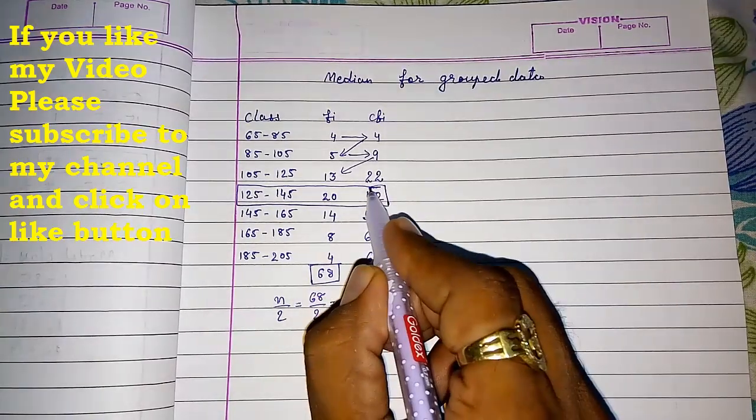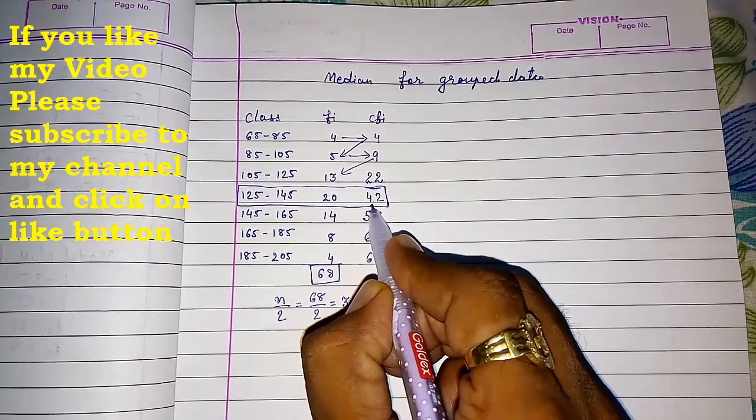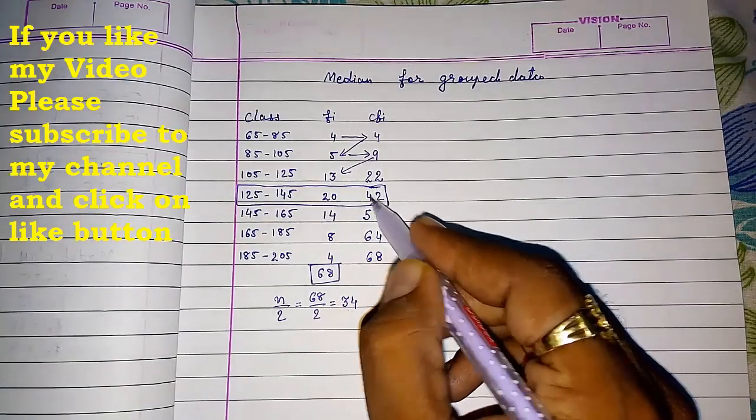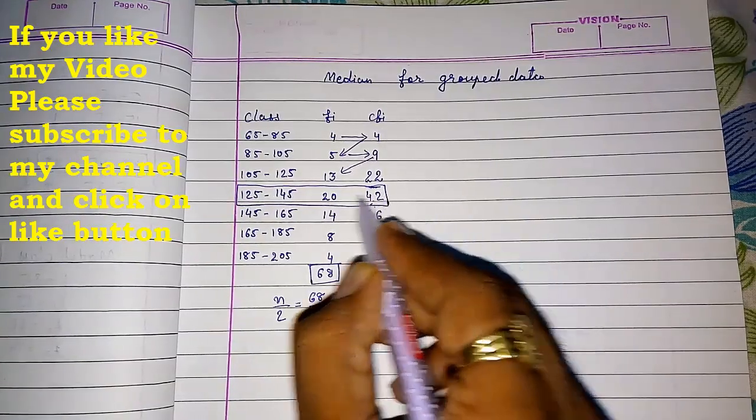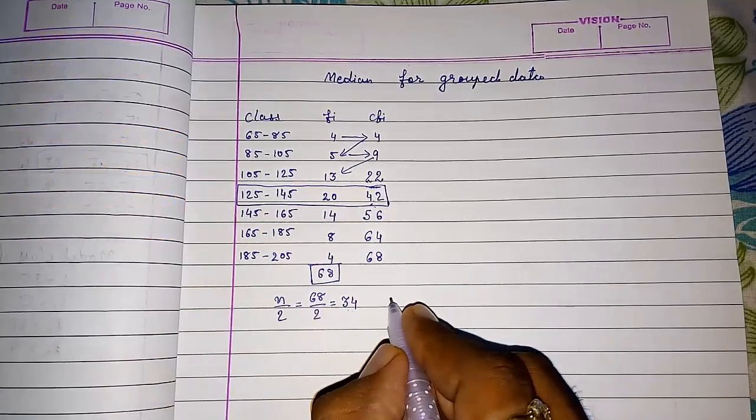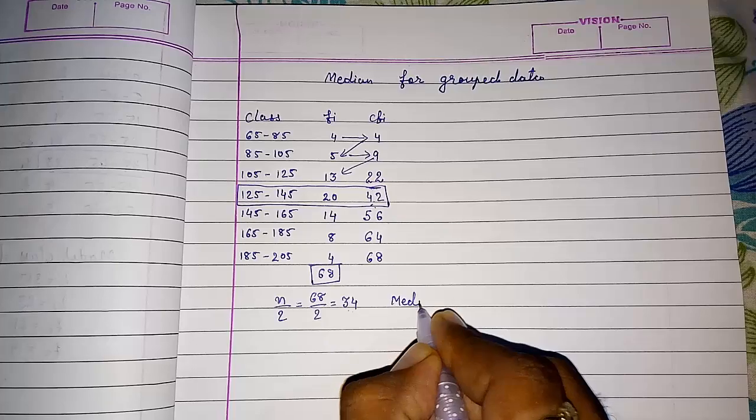34 is coming here, so we have to see the frequency greater than 34. 42 is greater than 34, so we have to see that frequency. This class 125 to 145 is called the median class.